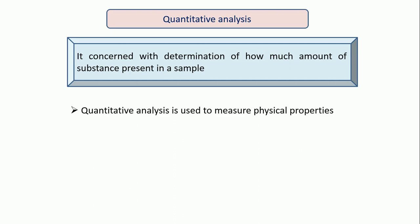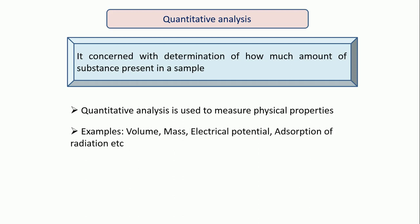Quantitative analysis is used to measure physical properties. That means it measures mass, it measures volumes, it is used to measure electrical potential, as well as the absorption of radiation. So these are some examples when we discuss quantitative analysis.